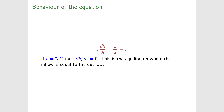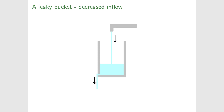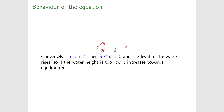If h equals i-bar/G, h stops changing — that's the equilibrium, where outflow matches inflow. If h is bigger than i-bar/G, the right-hand side is negative, so dh/dt is negative and the height falls back toward equilibrium. If h is smaller than i-bar/G, dh/dt is positive and the height rises. So the system always returns to equilibrium.